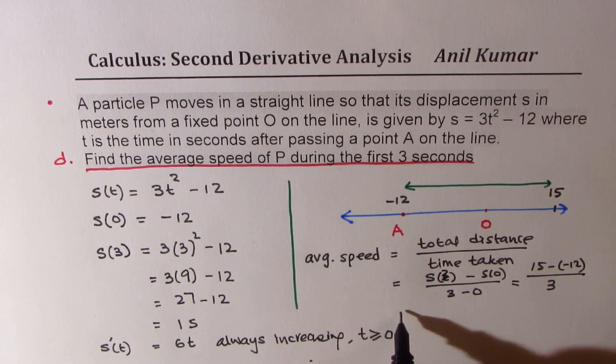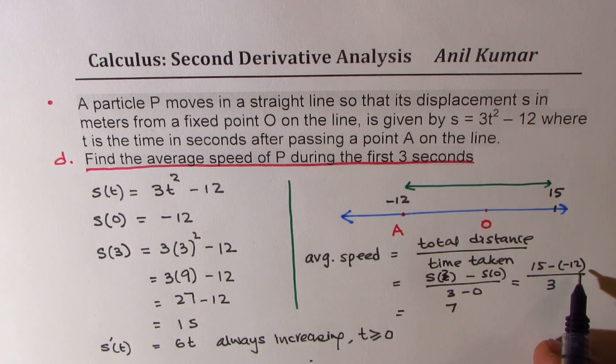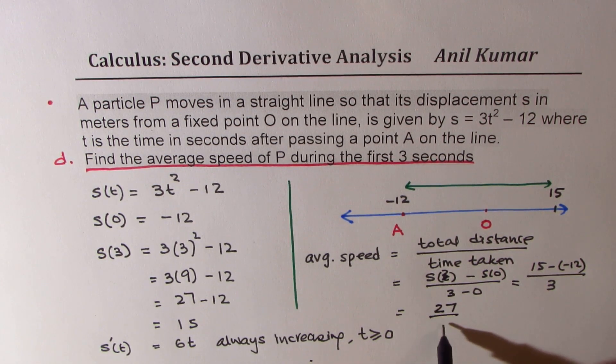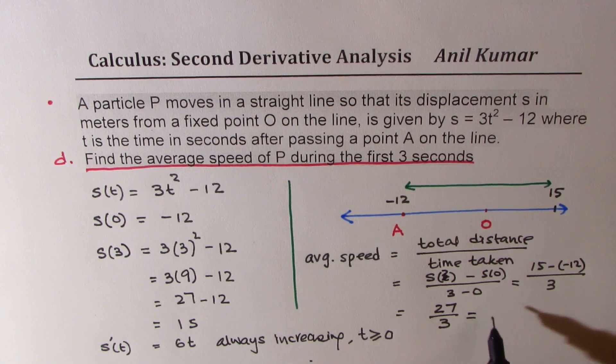Now that gives you, if you add them, because that becomes positive, 2 plus 5 is 7 and 1 plus 1 is 2. So we get again 27 over 3, which is 9. So average speed in this case is 9 meters per second. Is that clear?